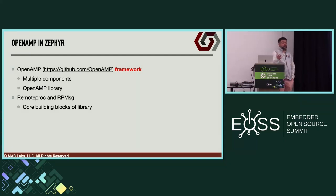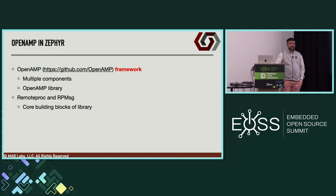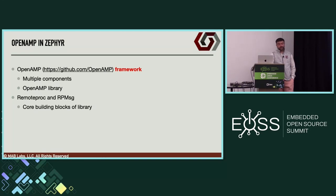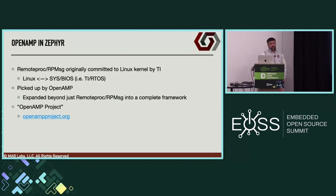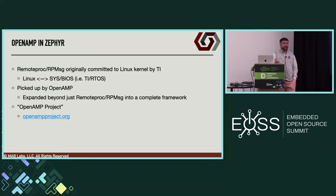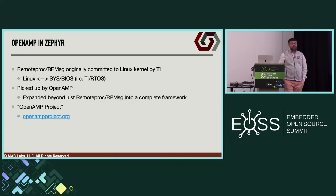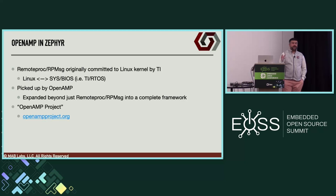That kind of framework led to the genesis of the OpenAMP framework, which you can find on a GitHub repo. There are multiple components, including the OpenAMP library with RemoteProc and RPMessage as the core building blocks. These two components were originally committed to the Linux kernel by TI, motivated by enabling communication between Linux and TI RTOS, then known as SYS/BIOS. OpenAMP then picked up TI's work and expanded it into a much more comprehensive library and framework.